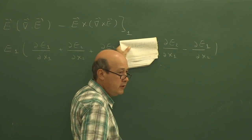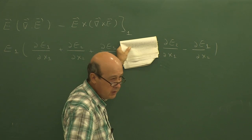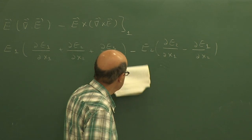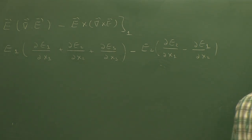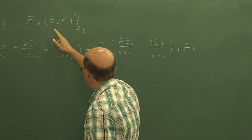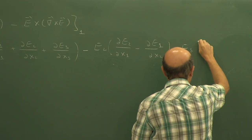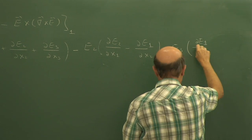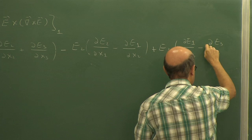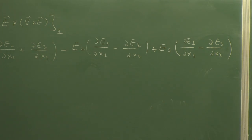The term del E2/del x1 minus del E1/del x2 is the third component of curl E. The second component of the curl is del E1/del x3 minus del E3/del x1. So let us try to write everything now — these two terms on the integral, we are trying to understand what this is.